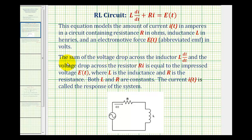Another way to say this is: the sum of the voltage drop across the inductor, L times di/dt, and the voltage drop across the resistor, R times i, is equal to e of t, often called the impressed voltage.